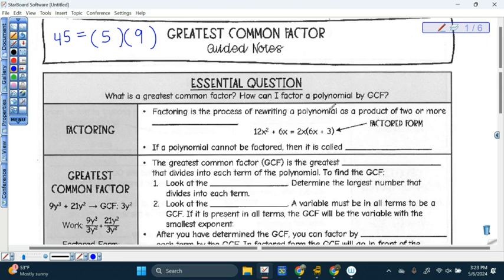But I can also do the same thing with a polynomial. So if I have something like 3x plus 6, I can rewrite this as 3 times x plus 2. 3 times x would give me 3x. 3 times 2 would give me 6.